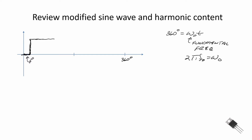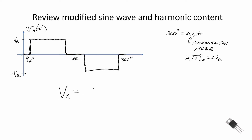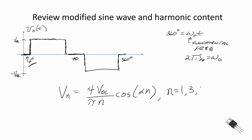We switch our load voltage to plus VDC, then right before 180 degrees — alpha degrees before 180 degrees — we switch off. We come back down to zero, then switch down to minus VDC, and then alpha degrees before 360 degrees we come back up. The Fourier series on this waveform resulted in harmonics Vn equal to 4VDC over pi times n, times cosine(alpha·n), where alpha is this offset angle. This applies for odd harmonics: n equal to 1, 3, 5, 7, and so on.